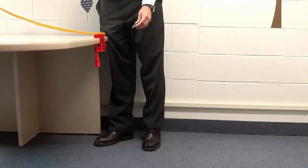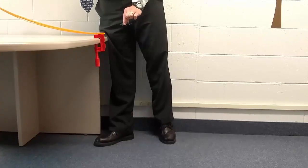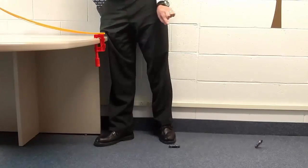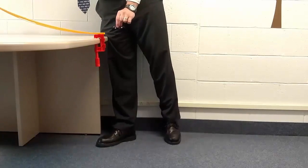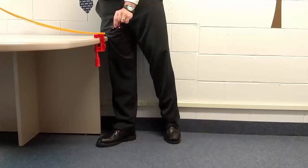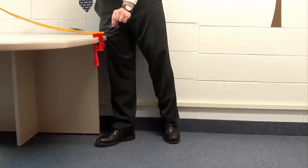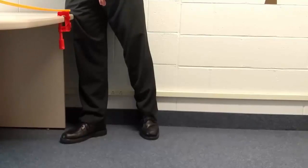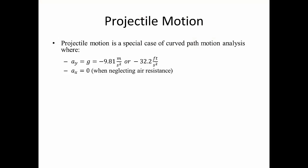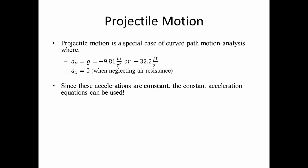Projectile motion is a special case of curved path motion analysis where the acceleration in the y direction equals gravity (-9.81 m/s² or -32.2 ft/s²) and the acceleration in the x direction is 0 when we neglect air resistance. Since these accelerations are constant, the constant acceleration equations can be used.